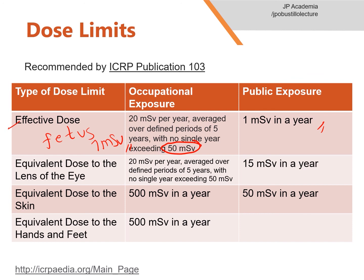For equivalent dose to the lens of the eye, the occupational exposure limit was previously 150 millisieverts, but it is now 20 millisieverts per year, averaged over a defined period of 5 years, with no single year exceeding 50 millisieverts — the same as the effective dose limit. For public exposure, the lens of the eye limit is 15 millisieverts per year. For equivalent dose to the skin, averaged over 1 square centimeter regardless of the area exposed, the occupational limit is 500 millisieverts per year and the public limit is 50 millisieverts per year. For the equivalent dose to the hands and feet, the occupational limit is 500 millisieverts per year, with no corresponding limit for the public exposure. That concludes this lecture.